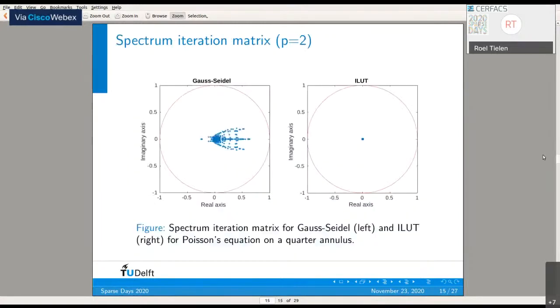If we compare the spectrum of the iteration matrix of P-multigrid with those two smoothers, we see a big difference. With ILU(T), we remain nicely close to the origin, implying fast convergence. The nice thing is that going from P equals 2 to P equals 3 or 4, the spectrum with Gauss-Seidel comes closer to the unit circle, but with ILU(T), we remain nicely close to the origin.